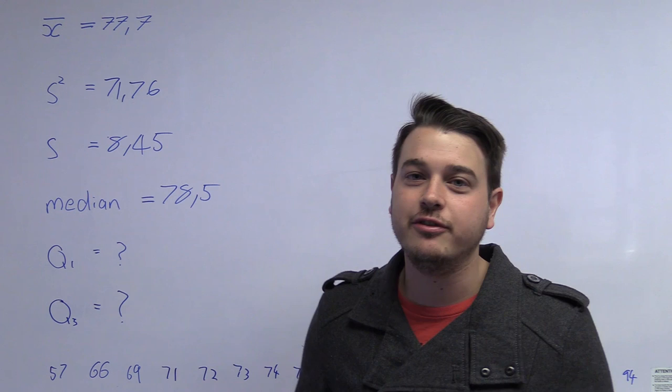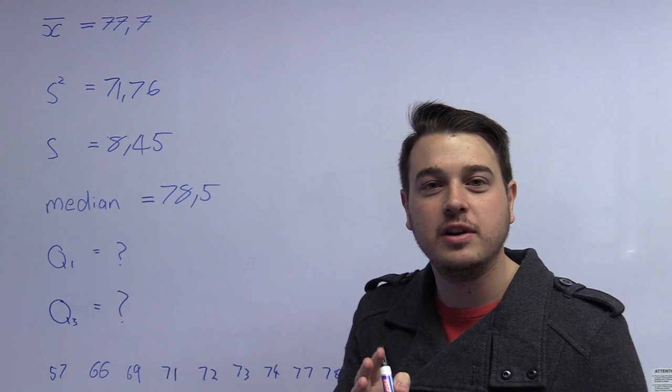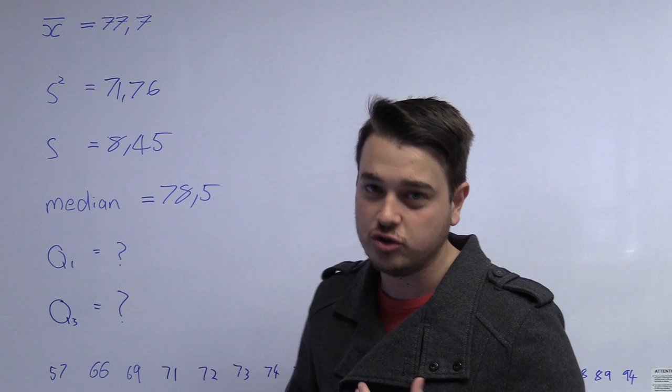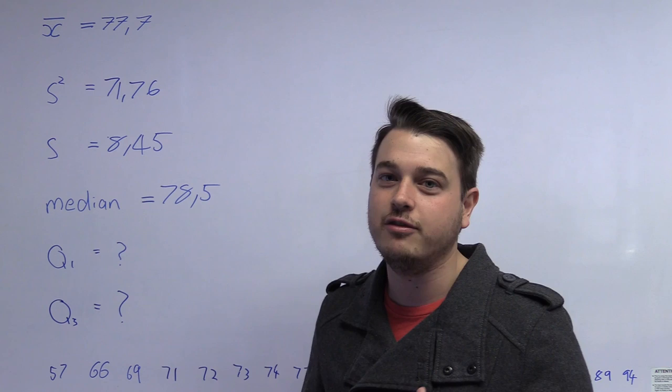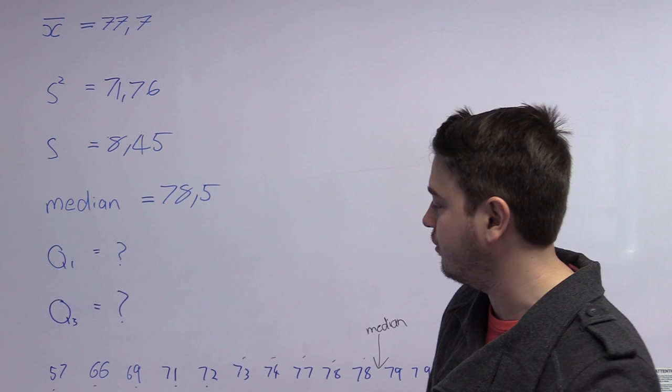Now we will calculate the first and third quartiles. To do that we divide our values into quarters. The first quartile is the first 25% and the third quartile is the last 25%. We take the number of observations, which is 20, divide by 4 to get 5. So we count 5 values from the bottom: 1, 2, 3, 4, 5 — we get 72. Then counting 5 from the median upward: 1, 2, 3, 4, 5 — we get 73.